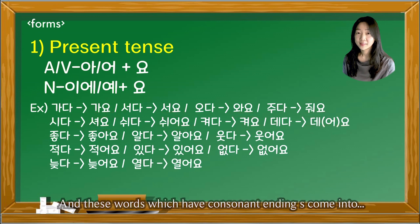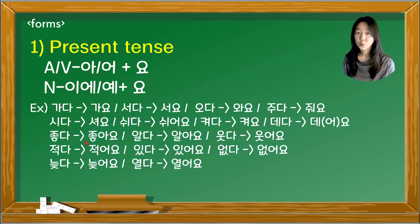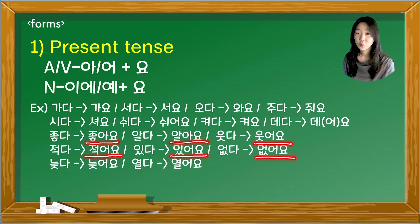Words with consonant endings take the following forms: 좋아요, 알아요, 웃어요, 적어요, 있어요, 없어요, 늦어요, 열어요.